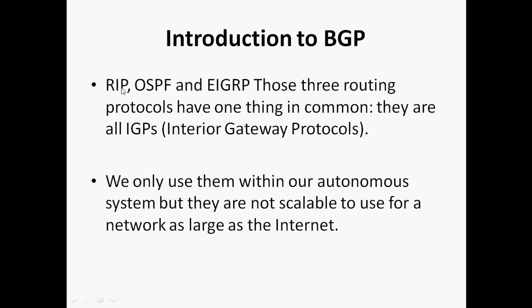RIP, OSPF, and EIGRP — those three routing protocols have one thing in common: they are all IGPs. IGP means Interior Gateway Protocol. These routing protocols work within an autonomous system. We only use them within our autonomous system, but they are not scalable. The main drawback of IGP is they are not scalable for a network as large as the internet.